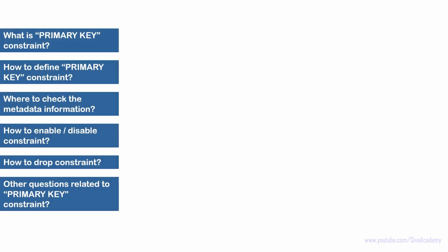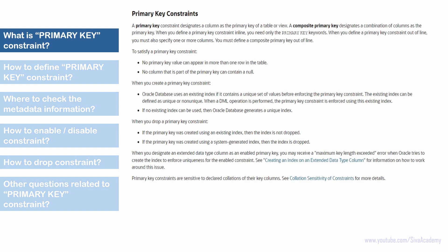Let's start with what is the primary key constraint. Here is a snippet from Oracle documentation. Three important things to remember: First, whenever we create a primary key on a column, all values in the column should be unique — no duplicates. Second, we cannot have a null value in a primary key column. This is the main difference from a unique key, where we can have any number of null values. Third, whenever we define a primary key on a column, an index will automatically be created.